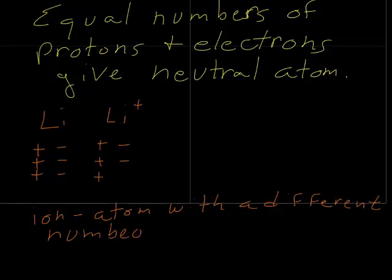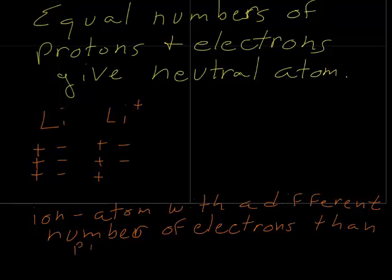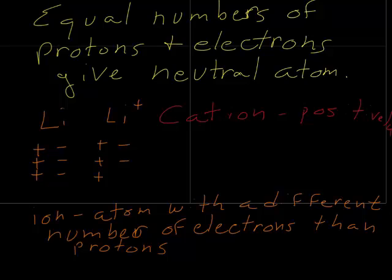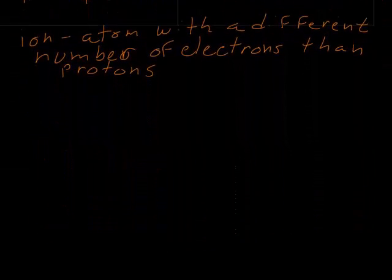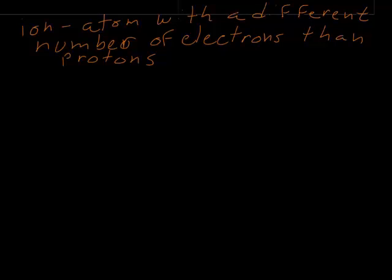An ion is an atom with a different number of electrons than protons. In the case of the lithium, because we're actually missing an electron, we have a positive charge not a negative charge, and that is a cation. It's counterintuitive because you're subtracting an electron to get a positive charge.